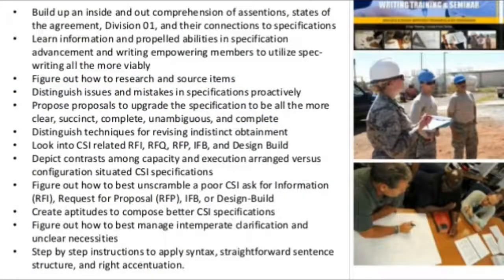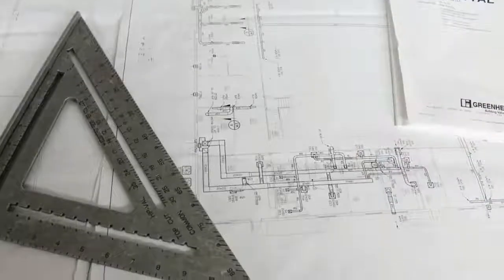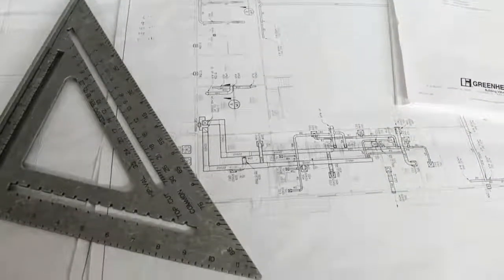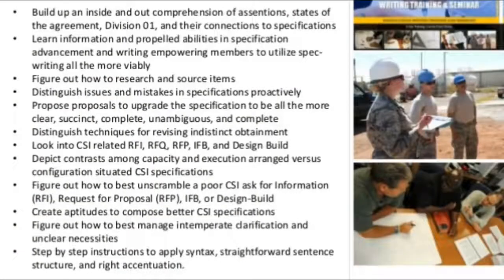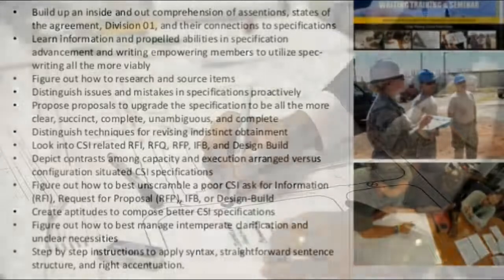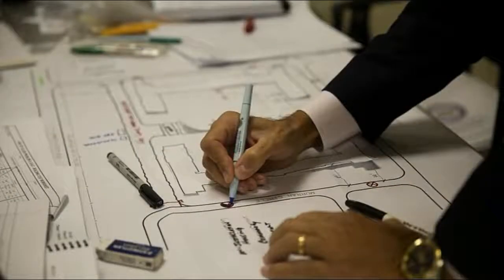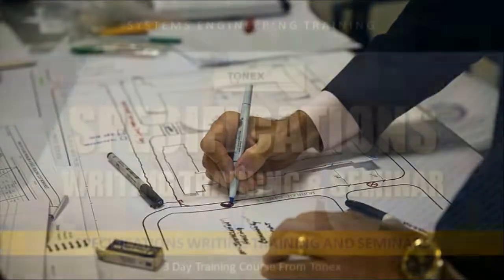Members will learn how to best interpret a poor CSI Request for Information (RFI), Request for Proposal (RFP), IFP, or design-build document, and develop skills to compose better CSI specifications. They will also learn how to best manage unclear clarification requirements and how to apply proper syntax, sentence structure, and correct punctuation.